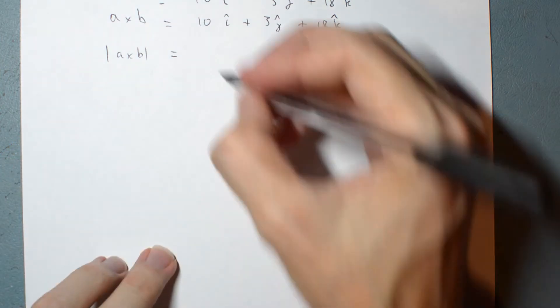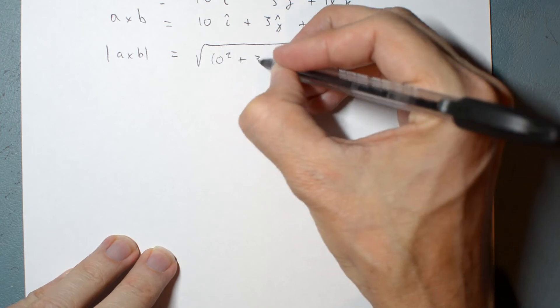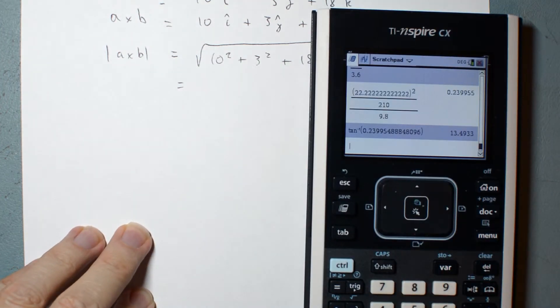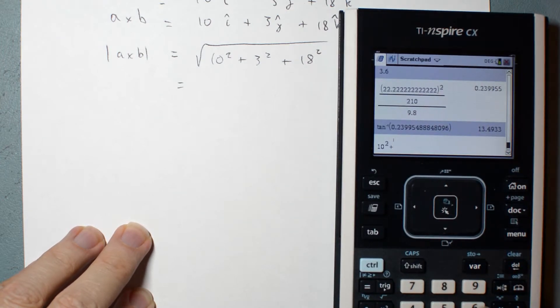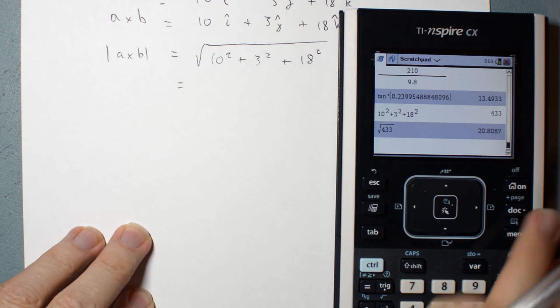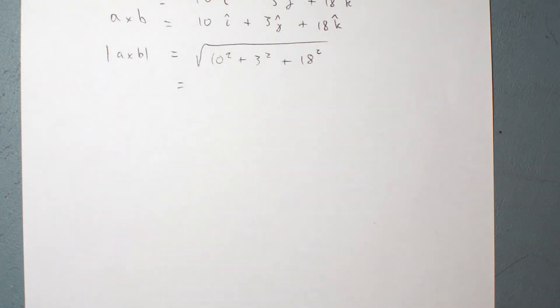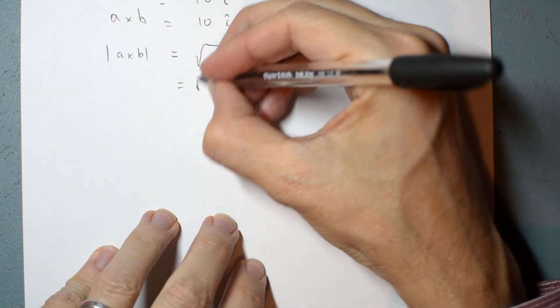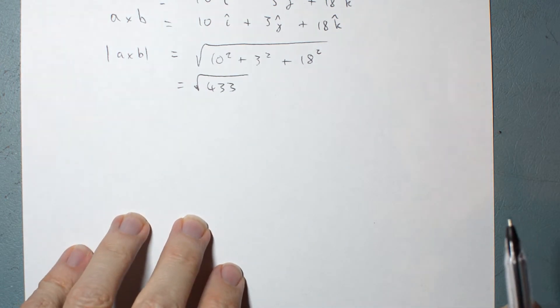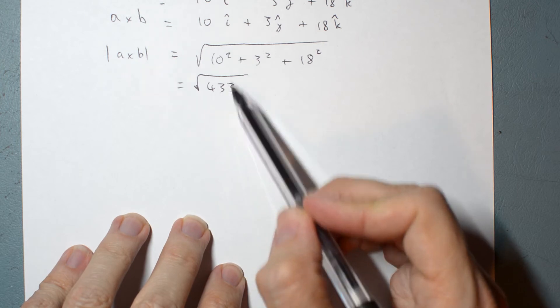The length of A cross B is the square root of 10 squared plus 3 squared plus 18 squared. You're going to get your calculator and you're going to go 10 squared plus 3 squared plus 18 squared, square root of that is square root of 433. That's the length of A cross B.